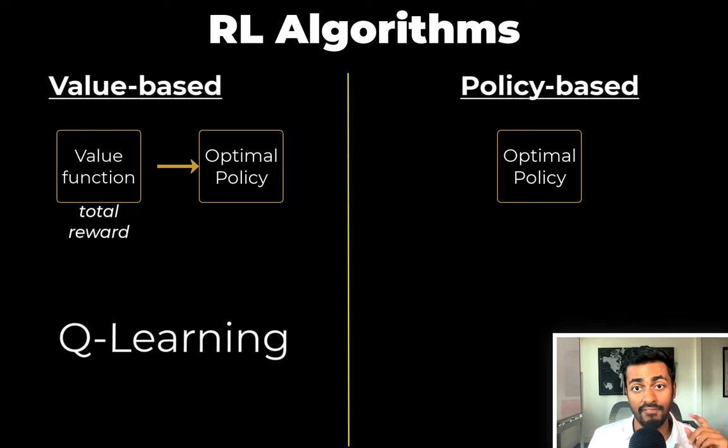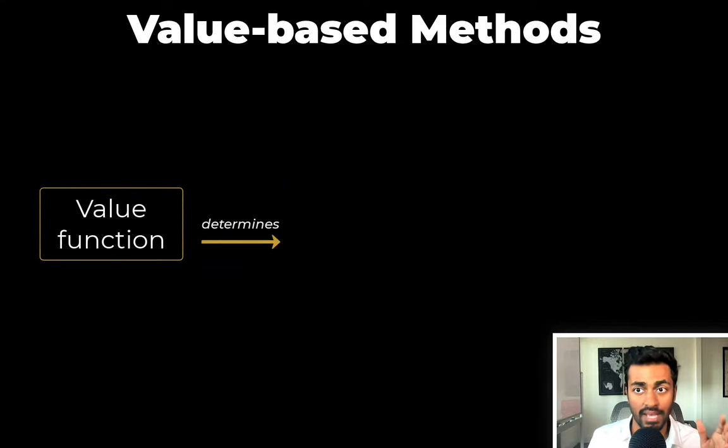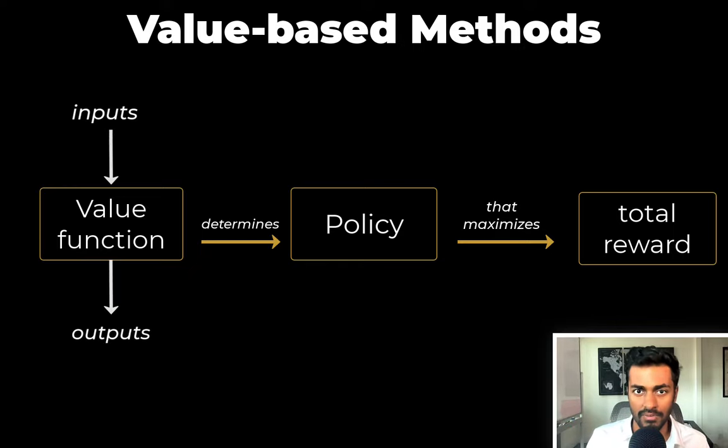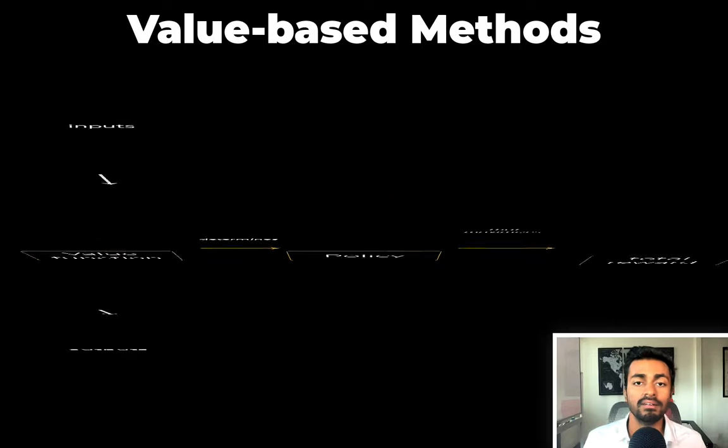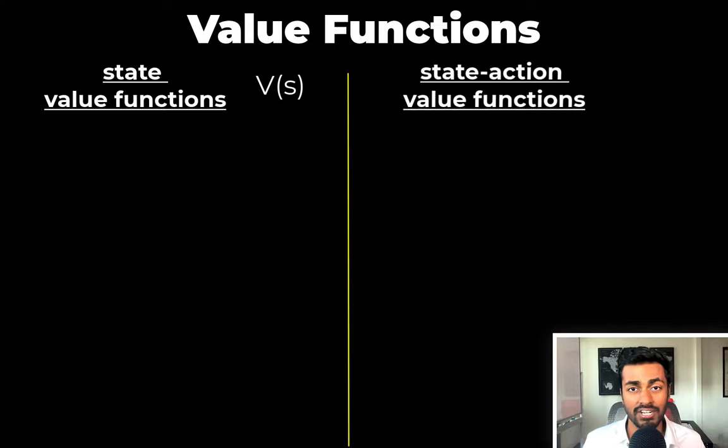Now, Q-learning is a value-based reinforcement learning method to solve problems. And so we can dive a little bit more into these value-based methods. So value-based methods determine a value function that in turn determines a policy that's going to maximize total rewards. A value function is a function. So it has some inputs and it generates an output. And depending on the inputs, there are two types of value functions. We have state value functions represented by V, and then we have state action functions represented by Q. But now states, actions, what are those?